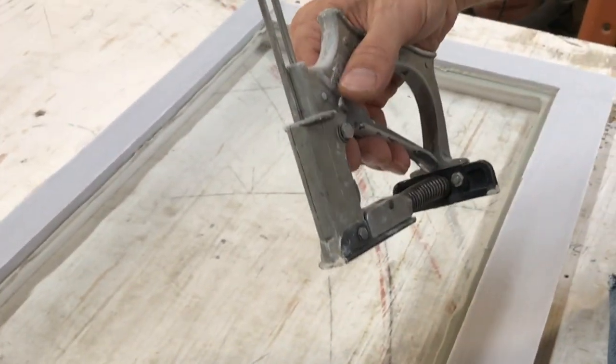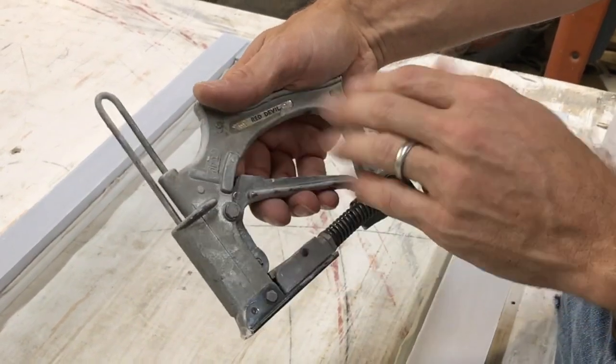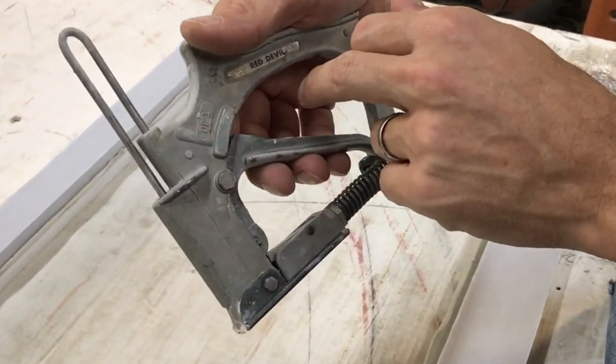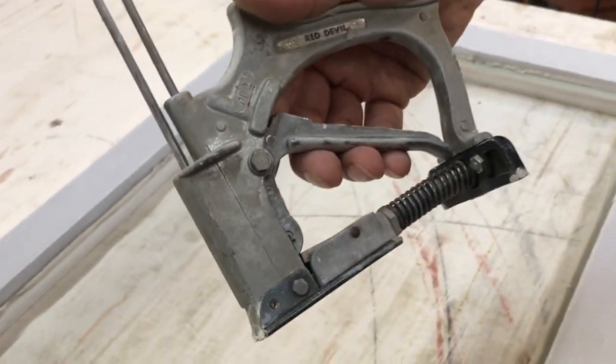So that's what these are. There's two different size points. There's number one size, which are the little ones, and then there's the number two size. And some of these shoot both. And this is a number one, so it only shoots the number ones. The number twos shoot both. So there you go. Glazing point driver for you.